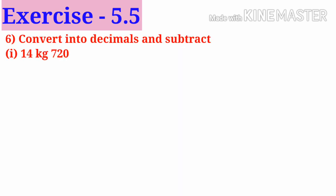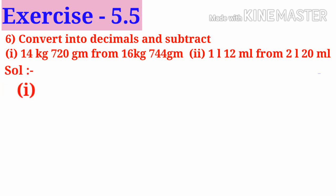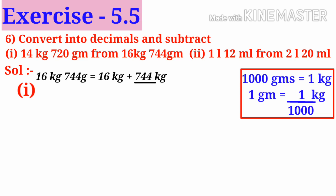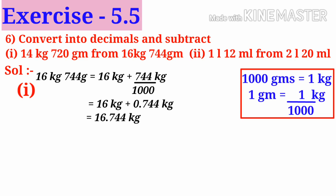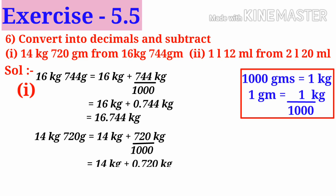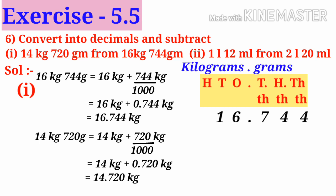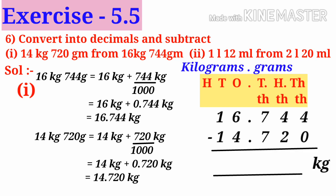Number 6: convert into decimals and subtract. Solution, number 1: 1000 grams makes 1 kilogram. 16 kilograms 744 grams equals 16 + 0.744 = 16.744 kilograms. 14 kilograms 720 grams equals 14 + 0.720 = 14.720 kilograms. Place in exact values and subtract: 16.744 minus 14.720 equals 2.024 kilograms.